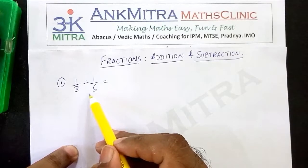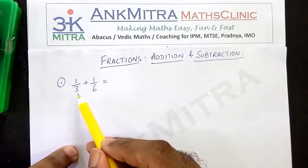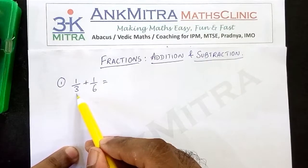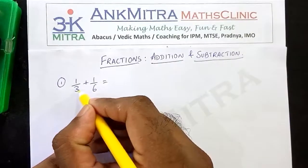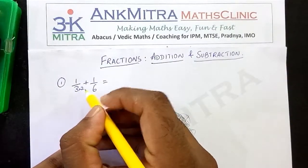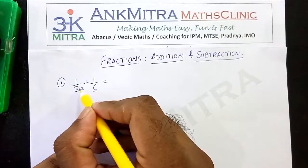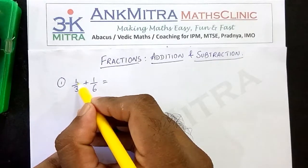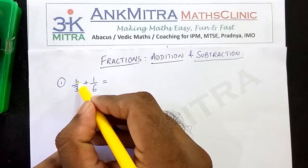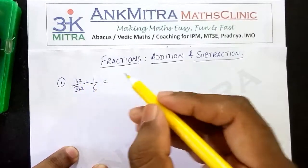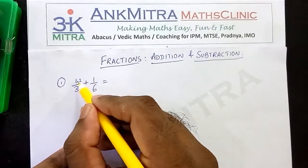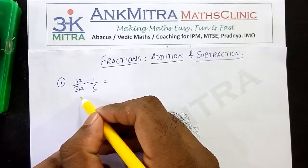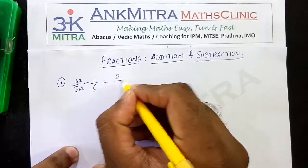Now we have to bring it to an equal number. We all know that 2 times 3 is 6. So we can easily double this 3 and it will become 6. We will basically multiply this 3 by 2. And while we are multiplying the denominator by 2, we have to multiply its respective numerator by the same number. So it will be 2 multiplied by 2 here as well. So this fraction will become — since both the numerator and denominator are being doubled — 2 upon 6.